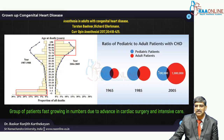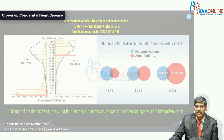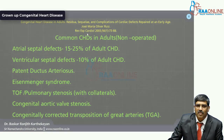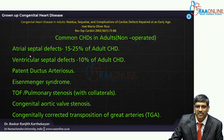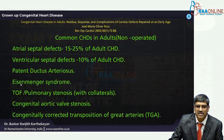The incidence of congenital heart disease growing into adulthood is progressively increasing over time. The most common congenital disease going into adulthood without operation includes atrial septal defect, which is very common, followed by ventricular septal defect, patent ductus arteriosus, and Eisenmenger syndrome, where there is a reversal of left-to-right shunt.